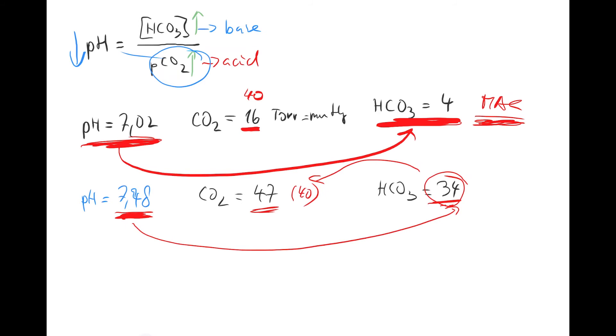And last one: look at this. pH which is 7.26, and CO2 or partial pressure is going to be 60, and bicarb is going to be 26. So which one is this? Respiratory acidosis.